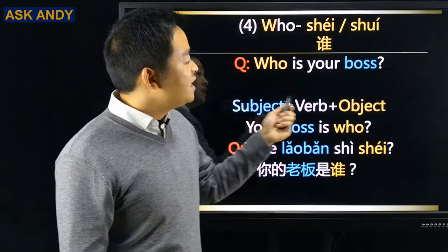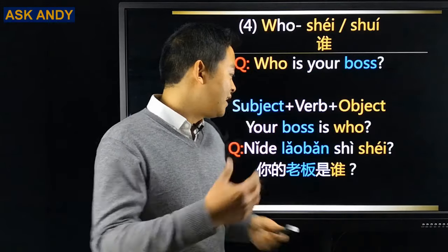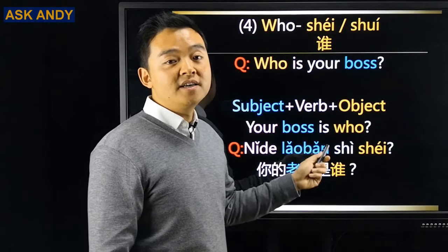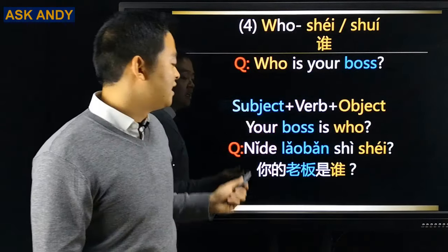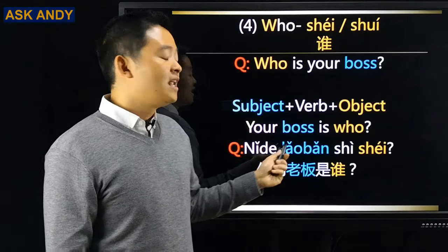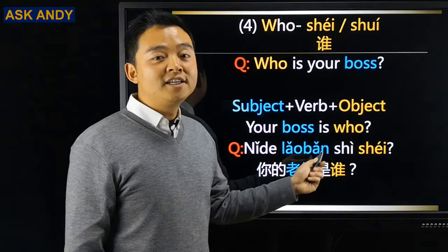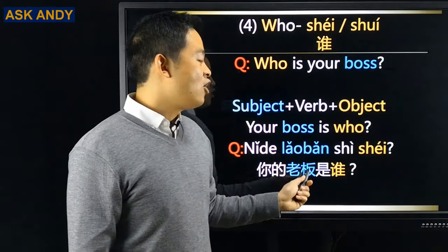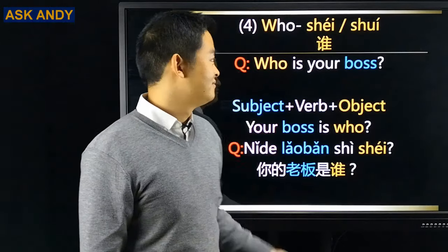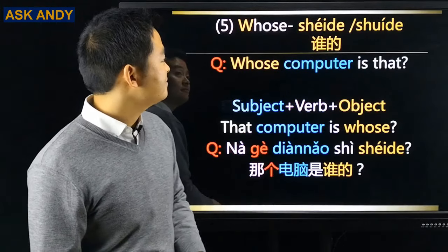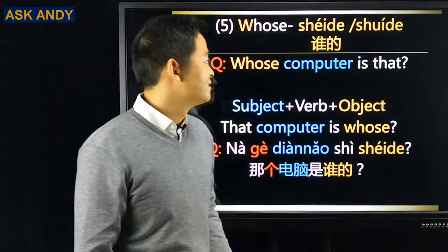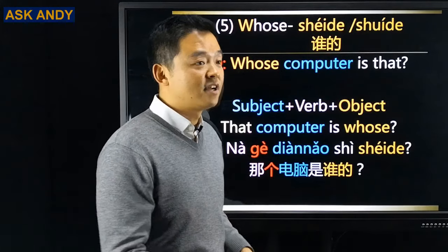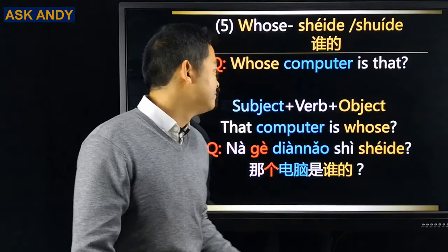'Who is your boss?' Rearrange to 'your boss is who': 你的老板是谁? Number five: whose — 谁的 (shéide) or 谁的 (shuíde). I recommend 谁的 (shéide).